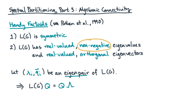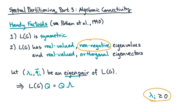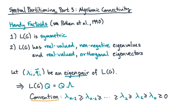Now what about the non-negative eigenvalues? That tells us that all the eigenvalues are at least 0. A common convention is to sort the eigenvalues, so we let the eigenvalues with smaller indices be the smaller eigenvalues. In this case, lambda_0 is the smallest eigenvalue and lambda_1 is the second smallest.